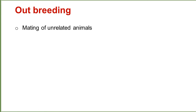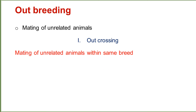Outbreeding is the mating of unrelated animals — animals which are not relatives to each other, and which may not even be from the same breed. The mating of such animals is called outbreeding.